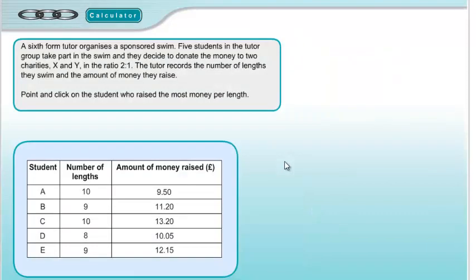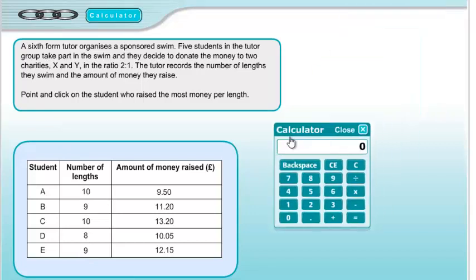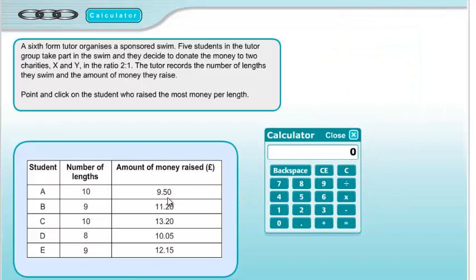Question 2 is linked to Question 1 because of these linking rings — same data, same table. This time we're asked to point and click on the student who raised the most money per length, so we do have to incorporate the lengths information. For the first student: £9.50 divided by 10 — we probably didn't need the calculator for that — gives 0.95 pounds, or 95p per length.